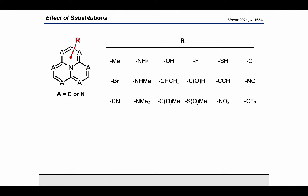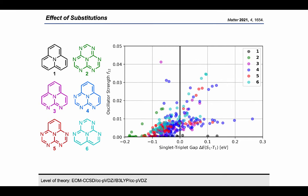Consequently, we were also interested in the effect of substitution of the core structures. Hence, we selected 18 small substituents with diverse electronic effects, including both electron donating and electron withdrawing, as well as substitutions based on the inductive and the mesomeric effect.